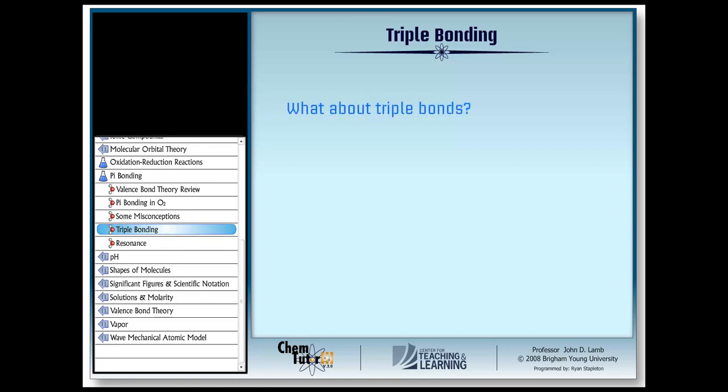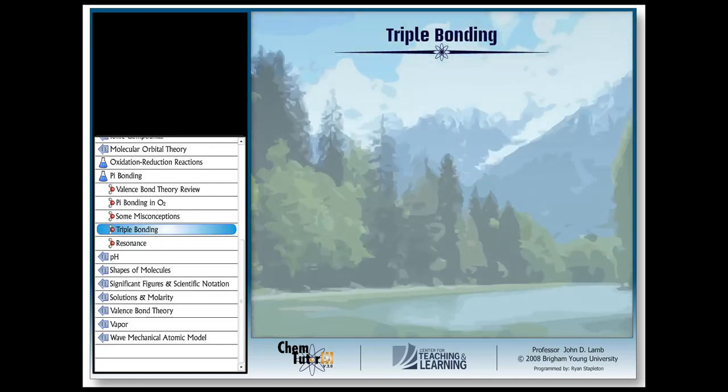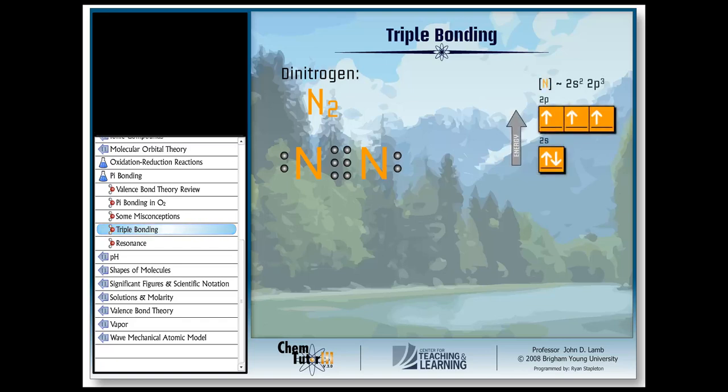Well, let's take a look at one of the best examples of triple bonding in nature, another component of the air we breathe, dinitrogen. Here's its Lewis dot structure. I'm sure you wouldn't have any trouble constructing this yourself. And here's the electron configuration of each nitrogen atom by itself. Notice that there are three unpaired electrons all ready to form the triple bond by pairing up with unpaired electrons on a neighbor.